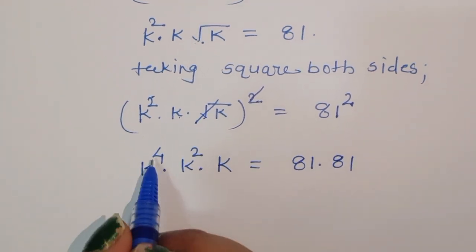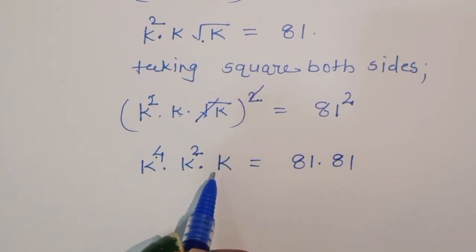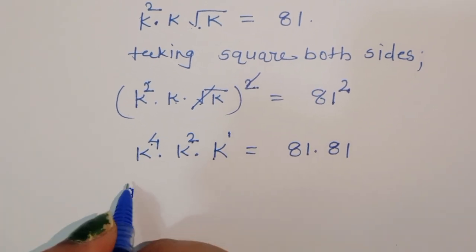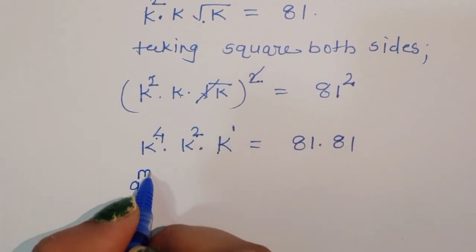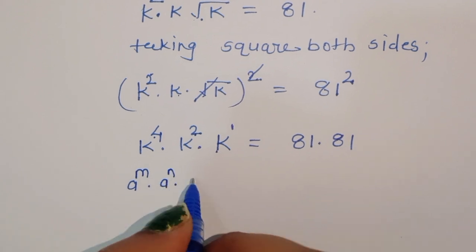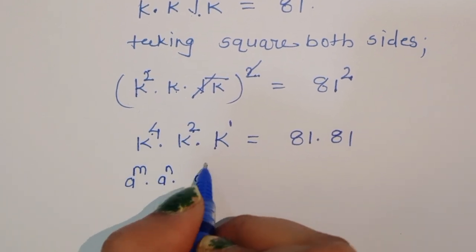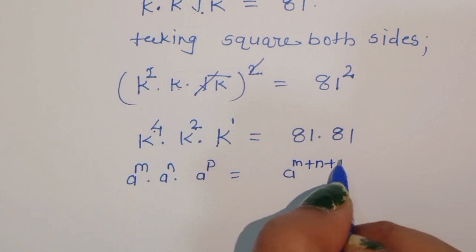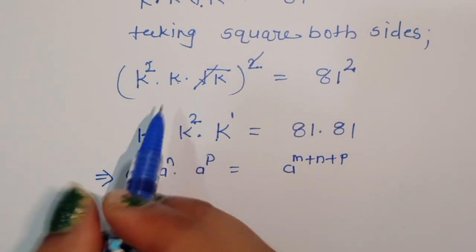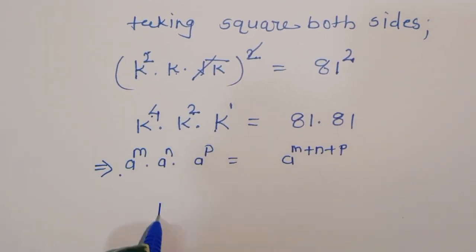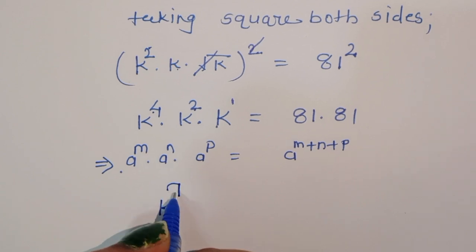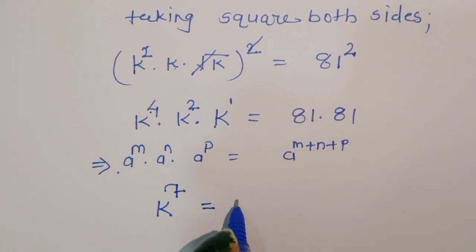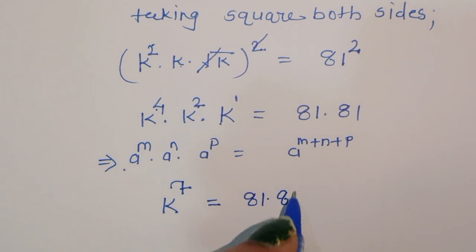Now k to the power 4 times k to the power 2 times k — we can add the powers because the formula is: a to the power m times a to the power n times a to the power p equals a to the power m plus n plus p. Using this formula, k to the power 7 is equal to 81 times 81.